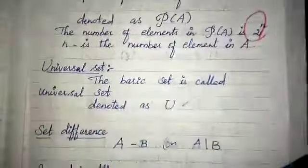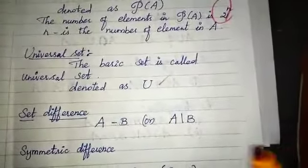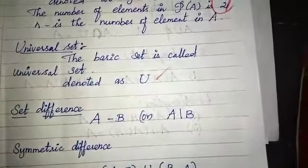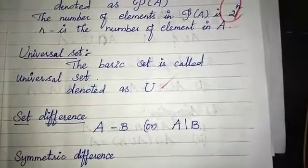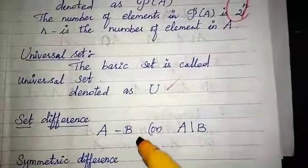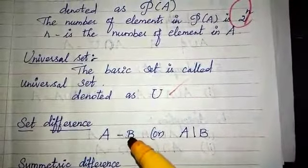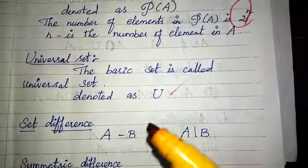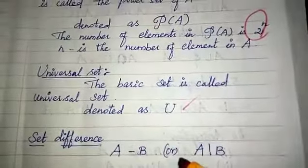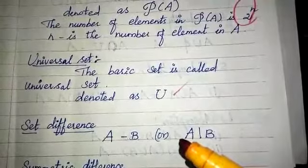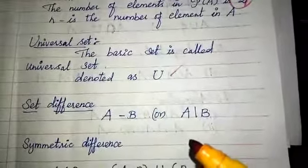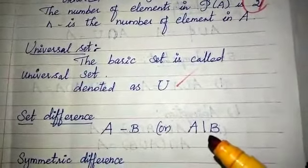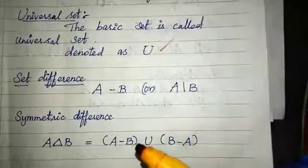Set difference: A difference B means all elements in A except those in B. Set difference is denoted A minus B, or A slash B. We have discussed set difference in previous classes in the 10th standard.